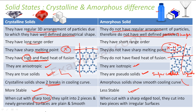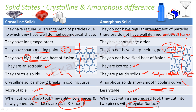When you cut a crystalline solid with a sharp tool, it splits into two pieces and the newly generated surfaces will also be plain and smooth. But when you cut an amorphous solid with a knife, it cuts into two pieces but the surface will be irregular — crystalline gives a plain and smooth surface, amorphous gives an irregular surface.